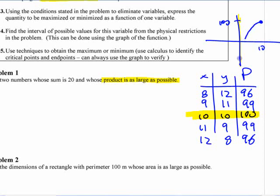If this continued down here to 0 and 20, well the product is 0, so it would cross there. It's going to be a quadratic function that looks like that. That maximum point is 10 is one of the numbers and 100 is the product.